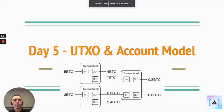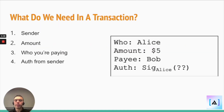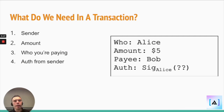Let's compare the UTXO versus the account-based model used by Bitcoin and Ethereum respectively. First, let's define what is needed to form a transaction: a sender, an amount, someone to receive that amount, and some collision-resistant authorization from the sender.